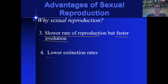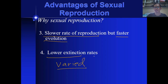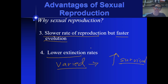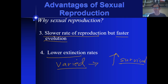Number four is lower rate of extinction. Because the organisms produced are varied, they have greater chances of survival, and it lessens the rate of extinction among the population. Unlike in asexual reproduction, all offspring are the same. If they encounter an unstable environment, all of them will be exterminated. That's another advantage of sexual reproduction over asexual reproduction.